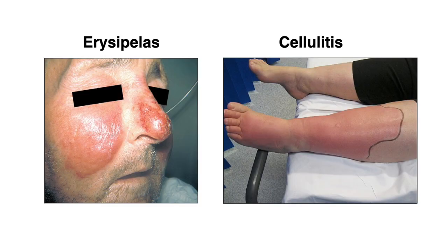When we contrast these two images of erysipelas and cellulitis, you can see that erysipelas really presents as this homogenous red patch with clear demarcation. And if you compare this with this image of cellulitis affecting this person's lower left extremity, you can see that it does look very similar to erysipelas.